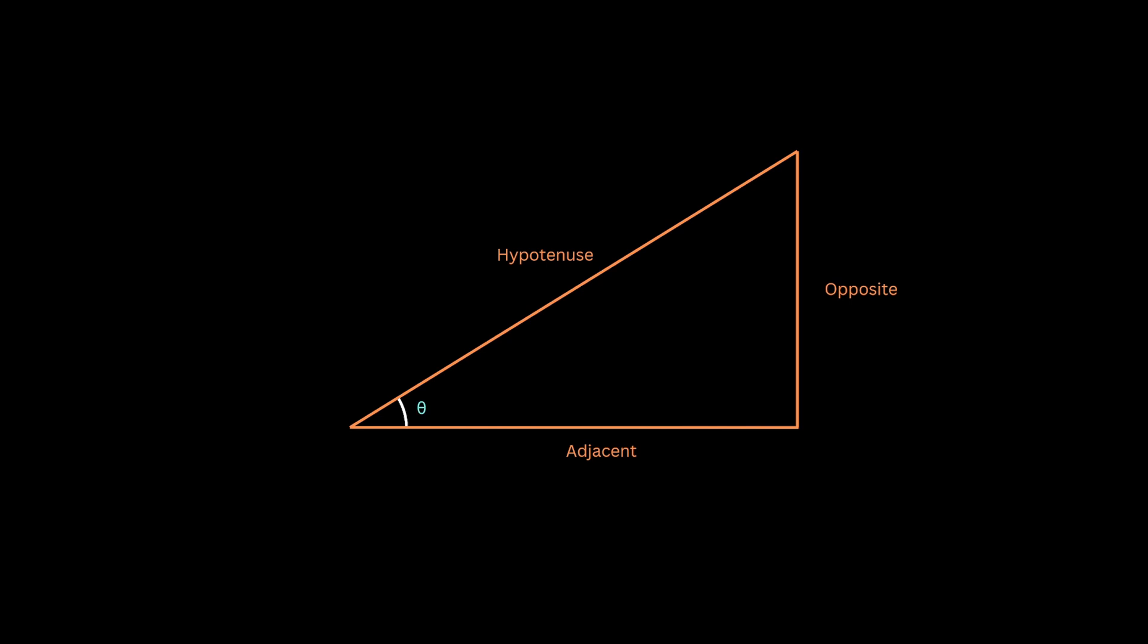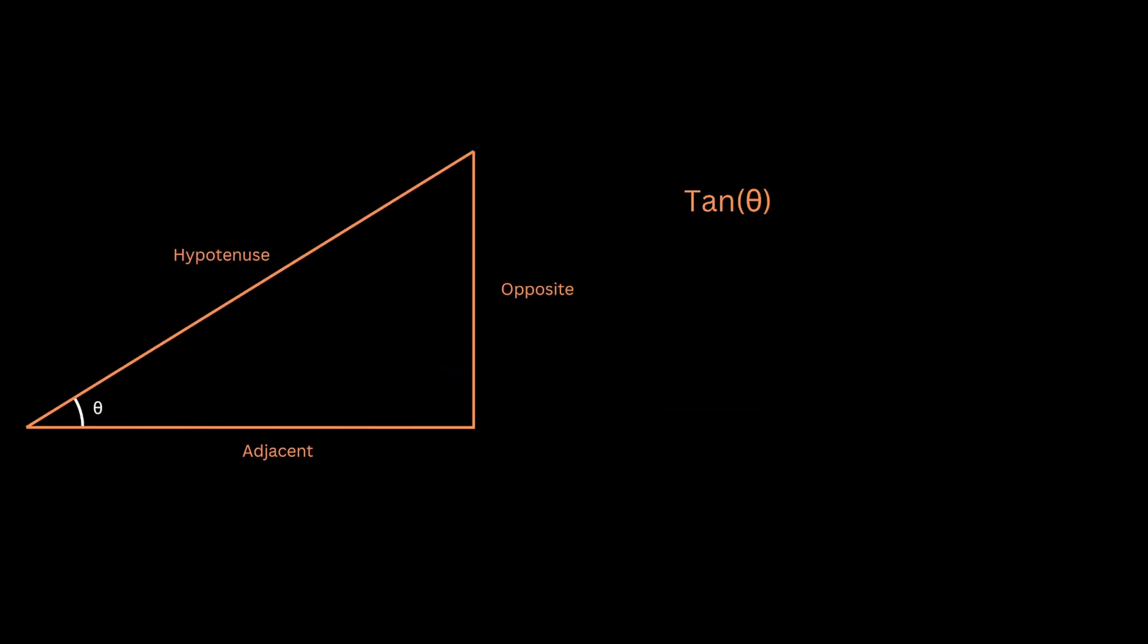Now tangent of this angle theta, tan(theta), is just the ratio of the length of the opposite side divided by the adjacent side. Technically it is opposite upon hypotenuse divided by adjacent upon hypotenuse, but hypotenuse cancels out.